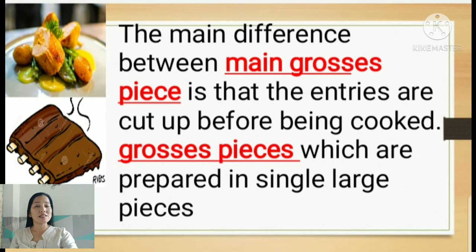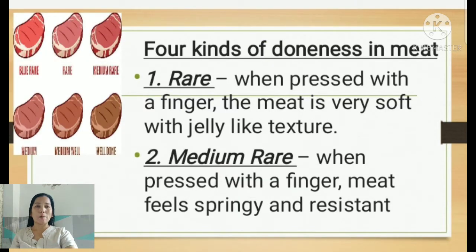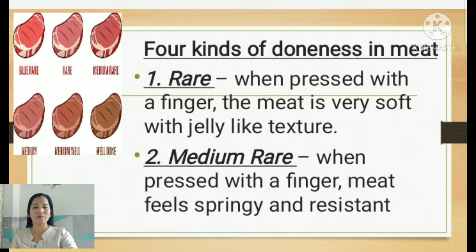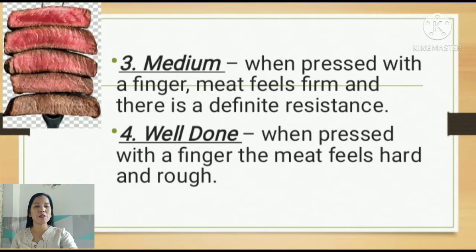Let us discuss the four kinds of doneness in meat. We have rare, medium rare, medium, and well done. When we say rare, when pressed with a finger the meat is very soft with a jelly-like structure. Medium rare: when pressed with a finger the meat feels friendly and has some resistance. Medium: when pressed with a finger the meat feels firm and there is a definite resistance. Well done: when pressed with a finger the meat feels hard and rough.